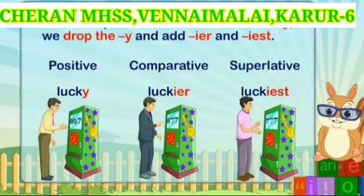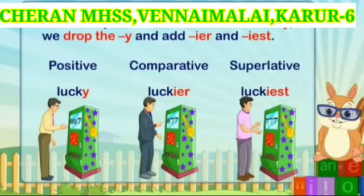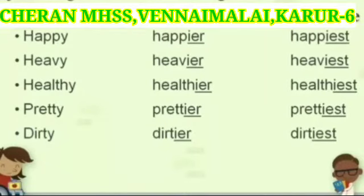Rule 3: When the positive ends in a consonant plus -y, we drop the -y and add -ier for comparative and -iest for superlative. For example: lucky, luckier, luckiest. More examples: happy, happier, happiest. At the end of this word there is the letter 'y'. We omit the 'y' and instead add -i, then -er for comparative (i-e-r) and -est for superlative (i-e-s-t).